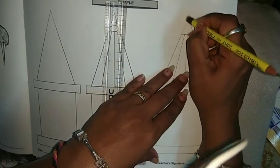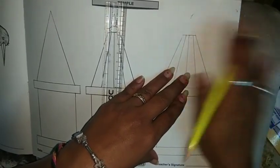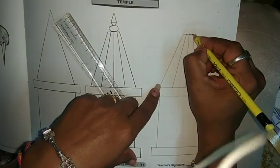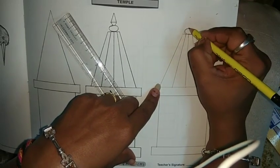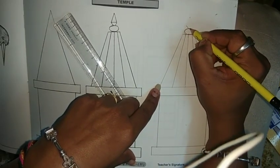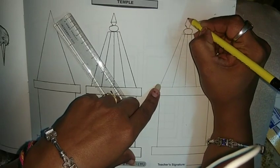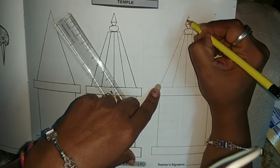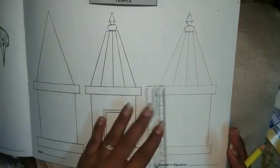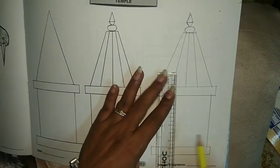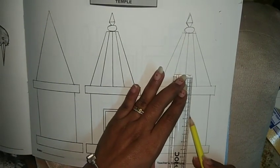Now we will erase this extra part. Now here we will draw one oval shape, then we will draw one oval shape like this, triangle shape like this. Now we will draw one oval shape like this.